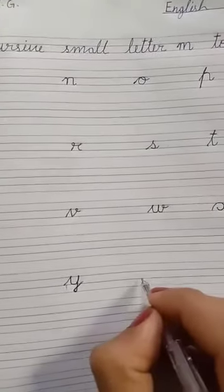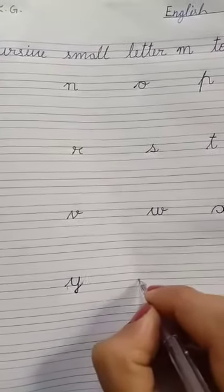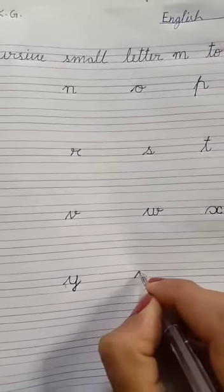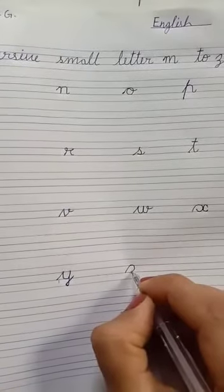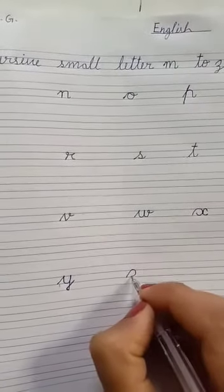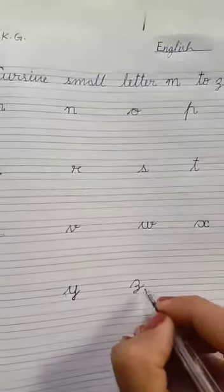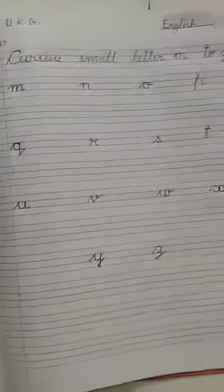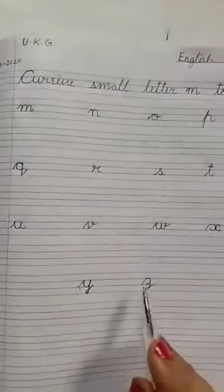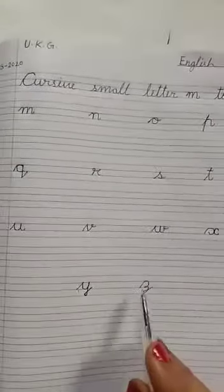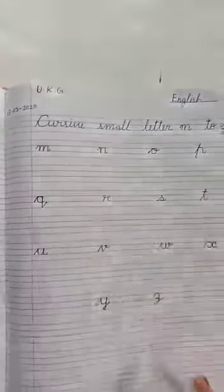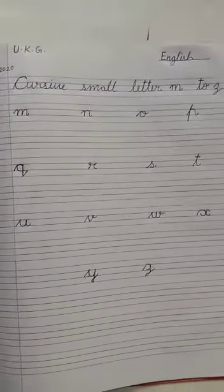Now Z. Z — start on the third line and go to the second line. Okay, that's it. Today we learned cursive letters M to Z, students.